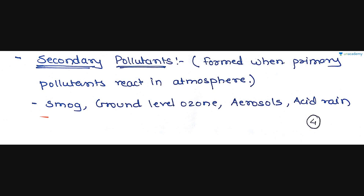Ground level ozone is another secondary pollutant. When ozone is in the stratosphere it is safe, but when it is in the troposphere or at ground level, it acts as a pollutant and is harmful to human beings. Aerosols and acid rain are also types of secondary pollutants.